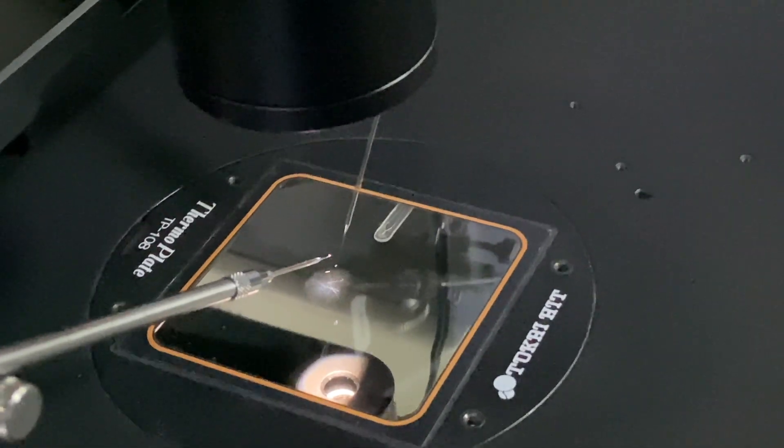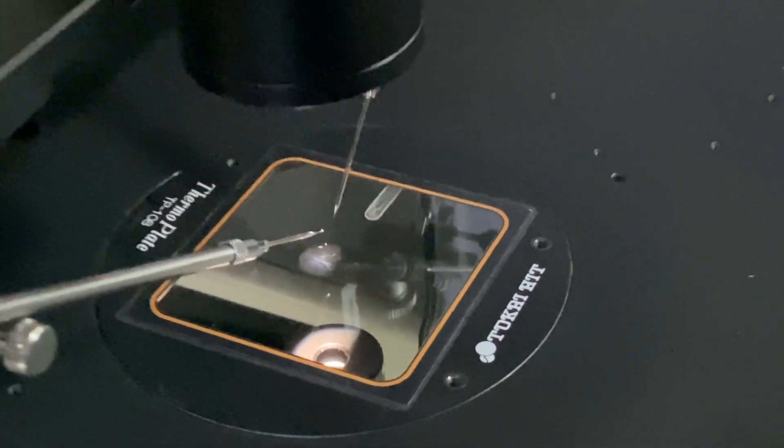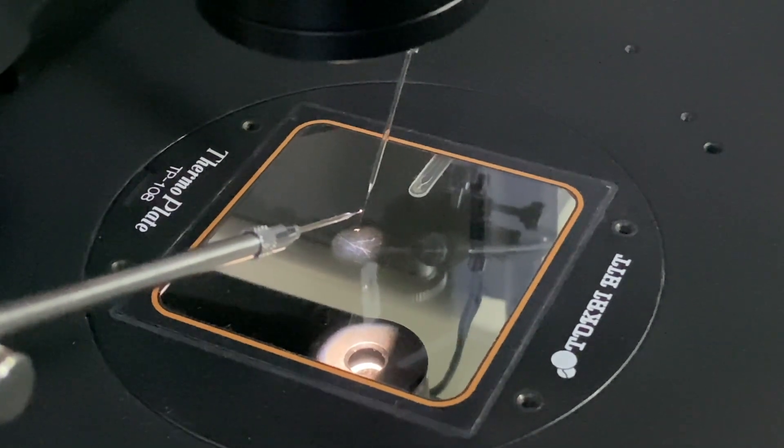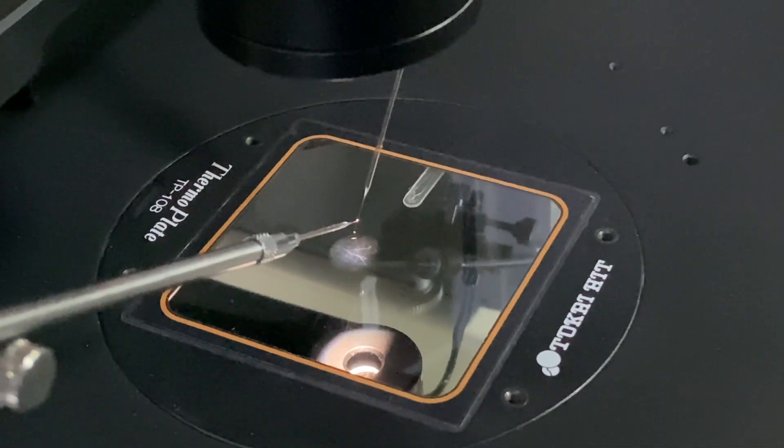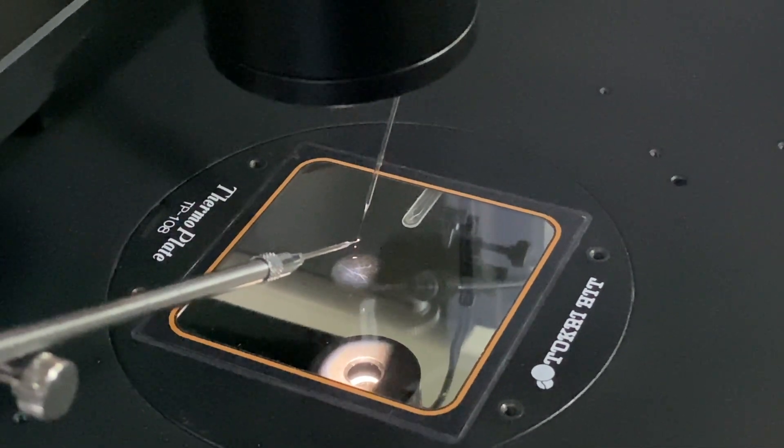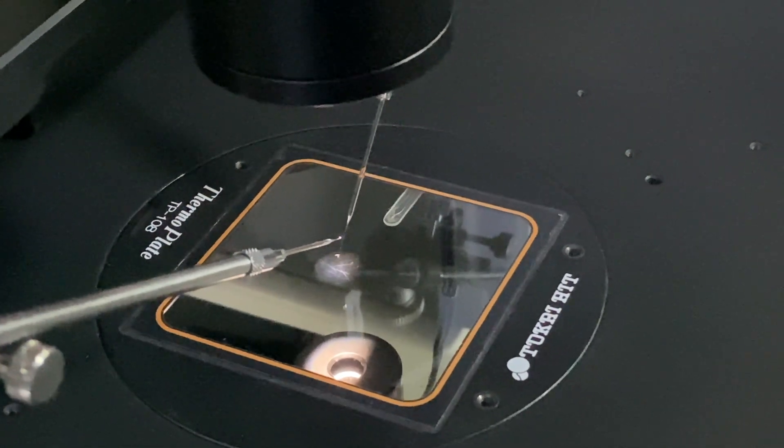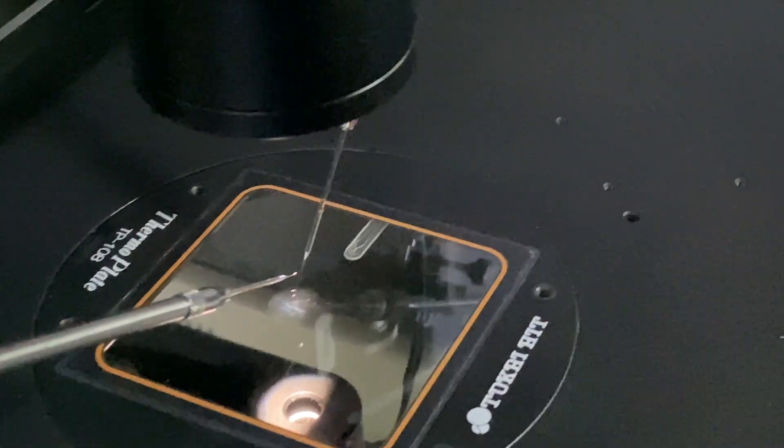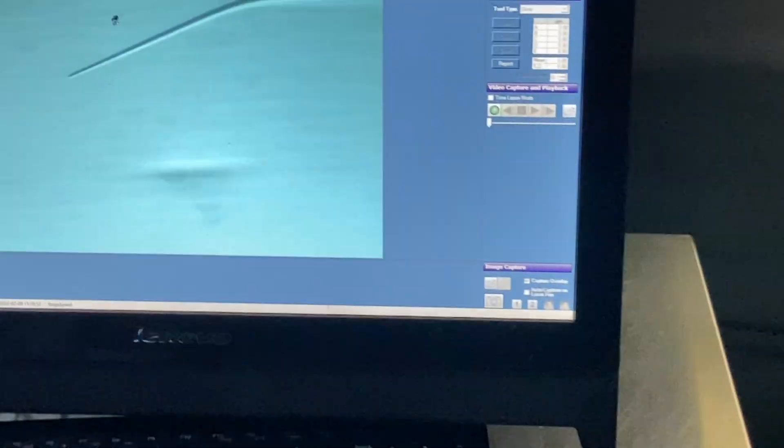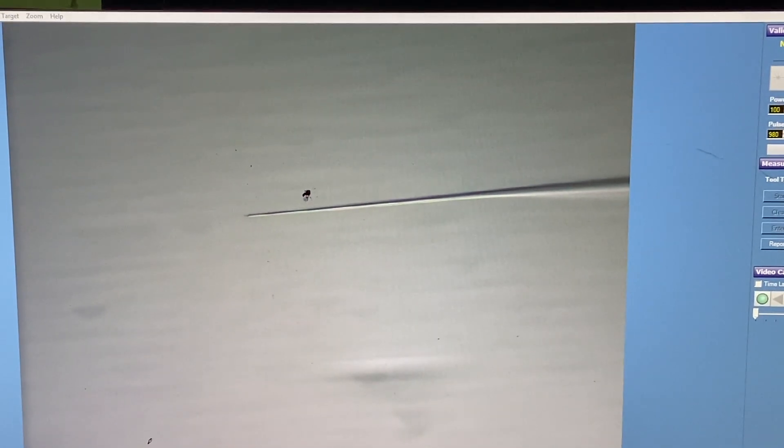So after that, what I will do is that I will bring it closer so that I can see it properly. You can see the needle. So I will just straighten it up a little bit. Now, once it is visible, that means it's focused. You can see the needle clearly there.